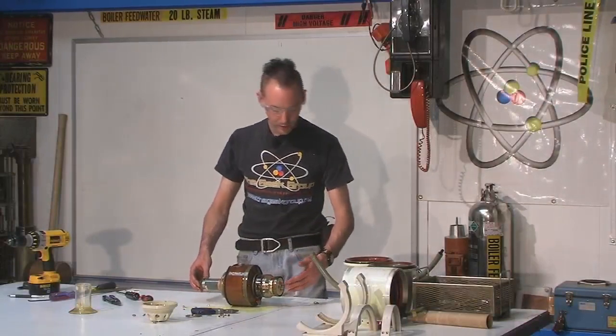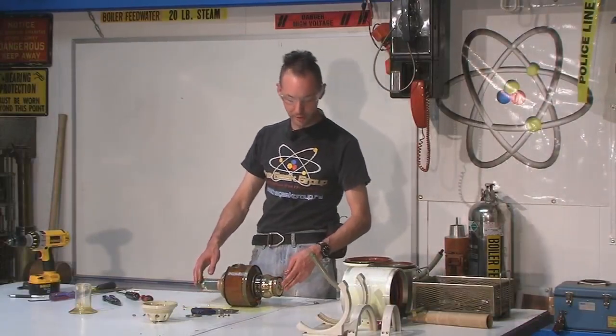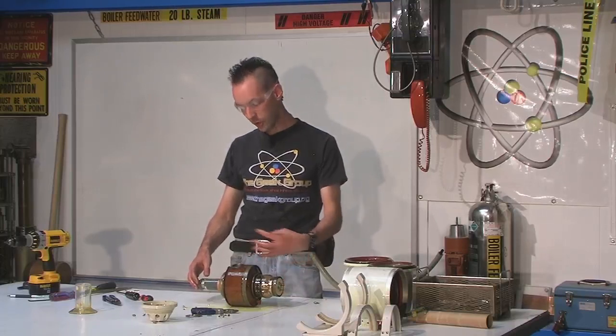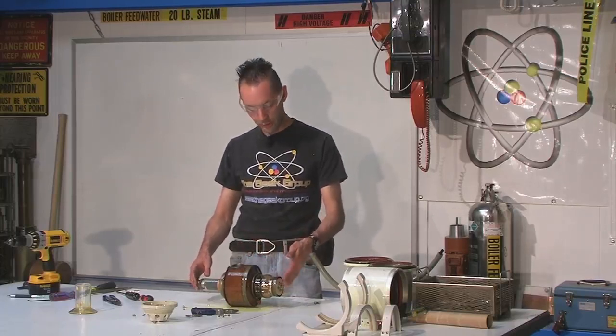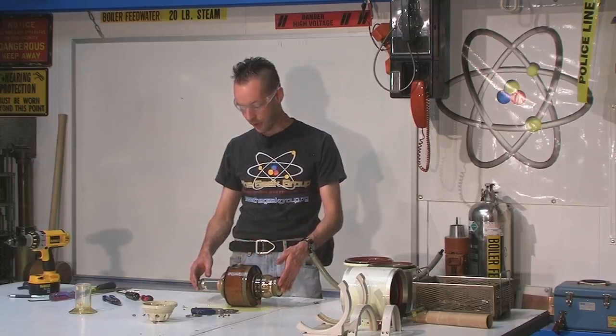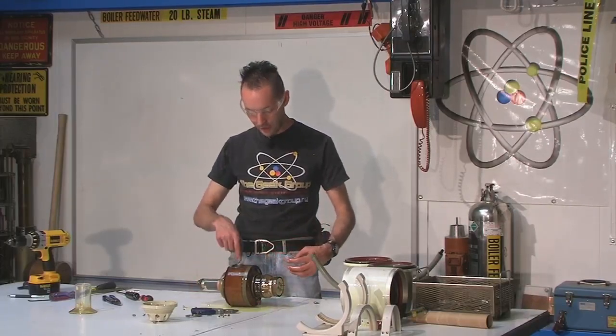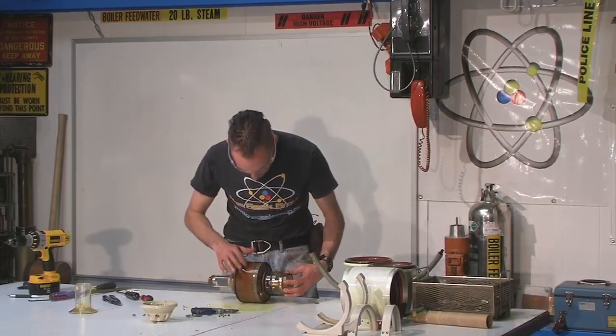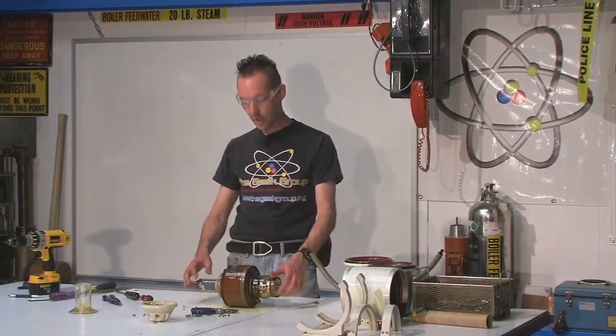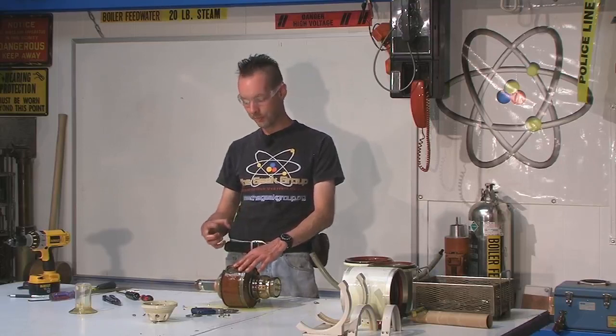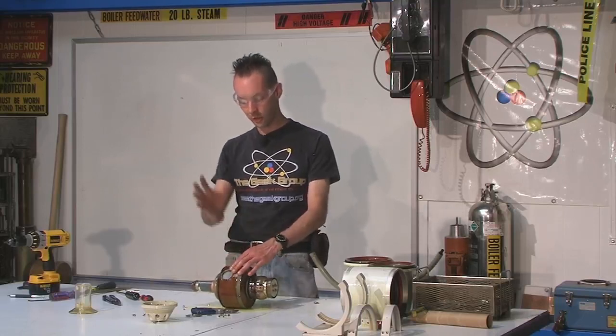And the way this works is the filament end and electron gun is at this end. So you're shooting electrons across. So this would be the cathode end and this would be the anode end. And you're shooting electrons across. And in the center here, you can't see it because it's hidden under all this copper shielding. But there's a target and it's a big chunk of tungsten. And when it hits that, it shoots off x-rays.